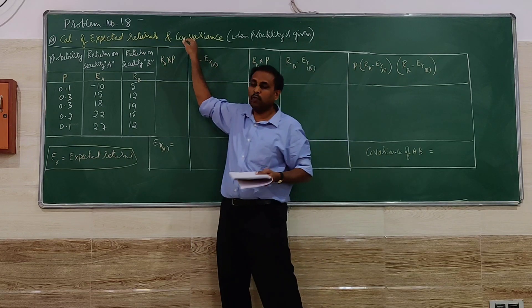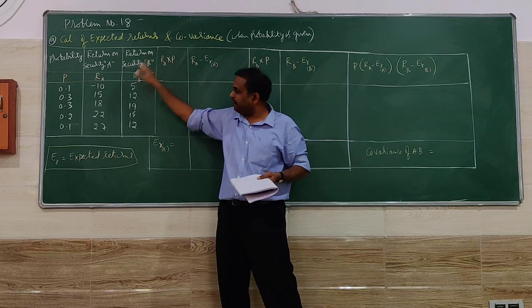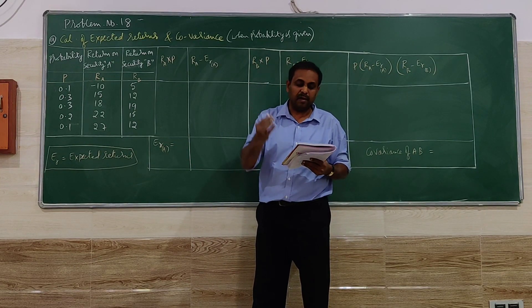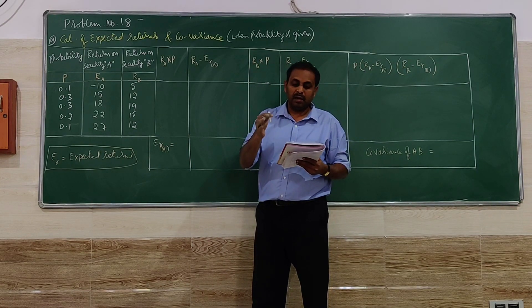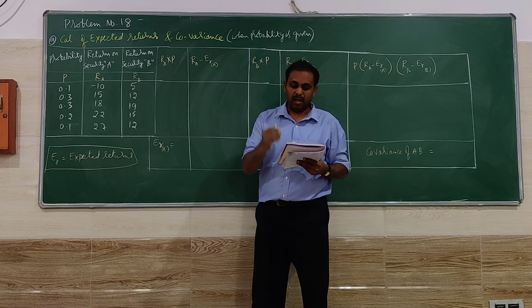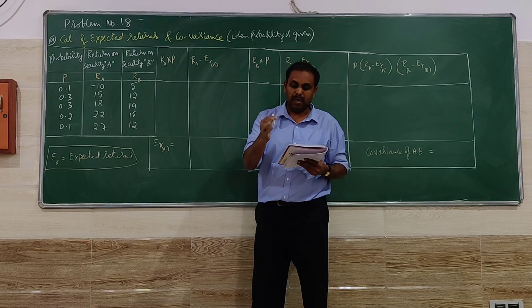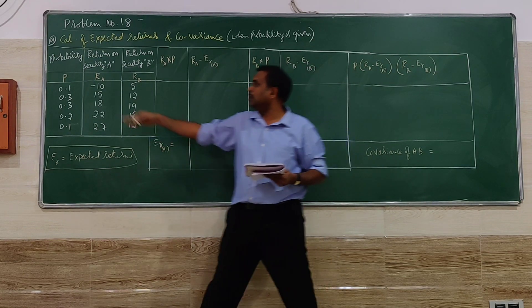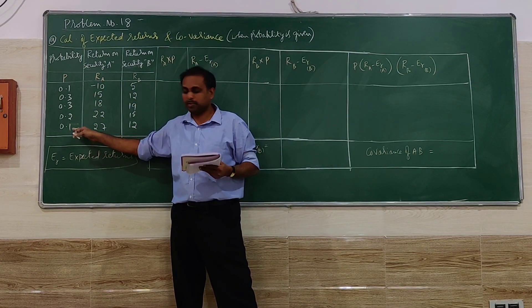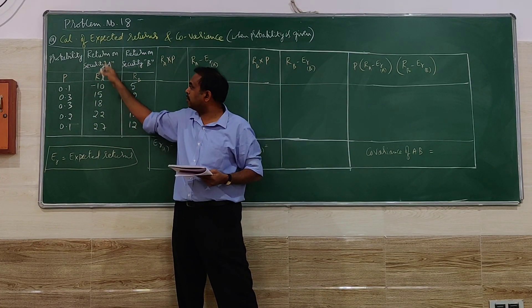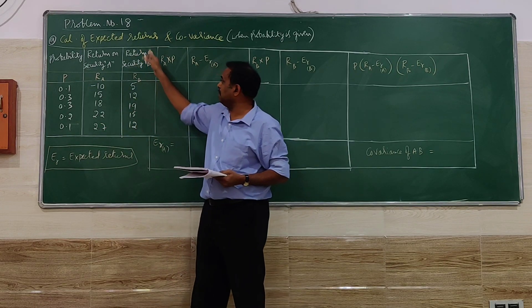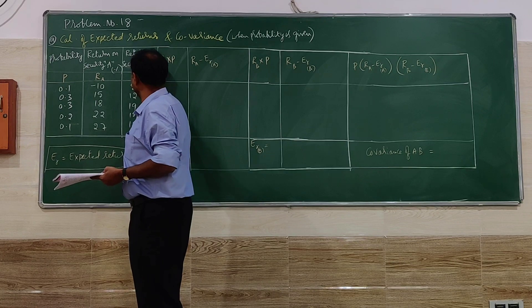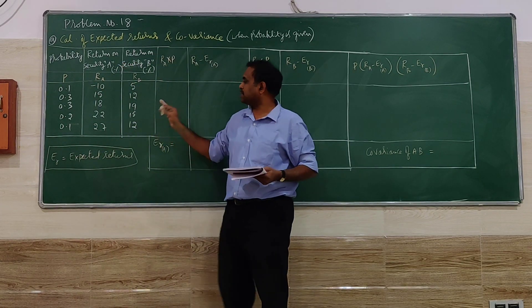So first to calculate covariance, definitely we need expected return. The problem goes like this: the return on security A and security B under five possible situations are given below. Five possible situations, probability is given, return on security A is given, return on security B is given. Return, that is, in percentage. Remember, return should always be in percentage.